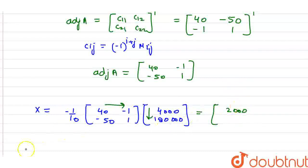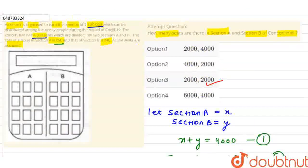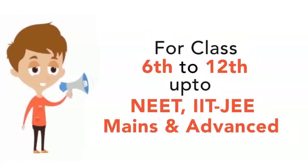The final value is [2000; 2000]. So x and y both equal 2000. Which option is correct? Option 3 is the right answer - 2000 seats in section A and 2000 in section B.